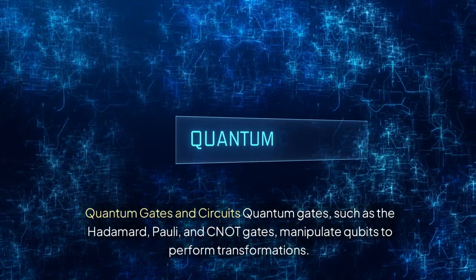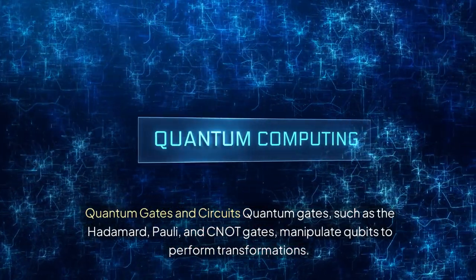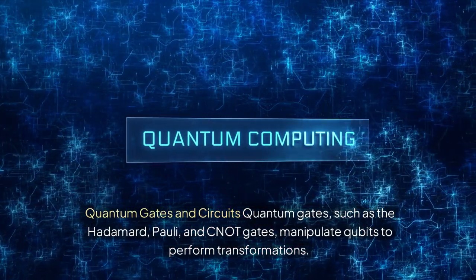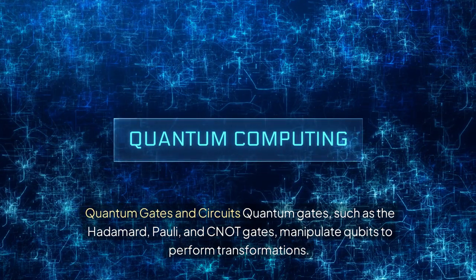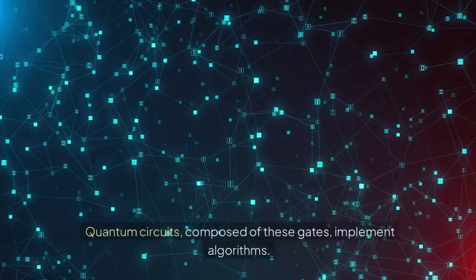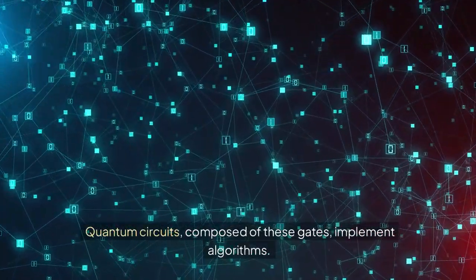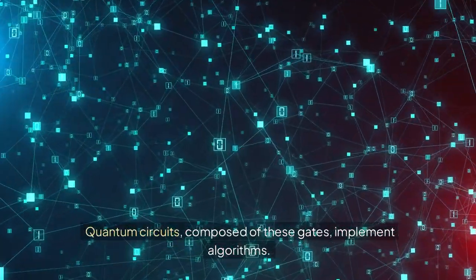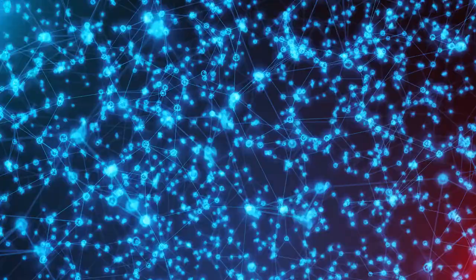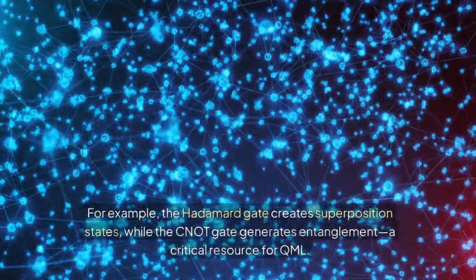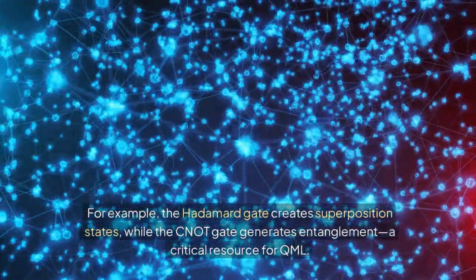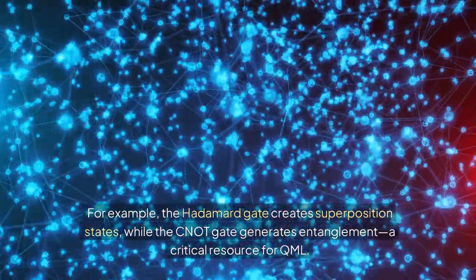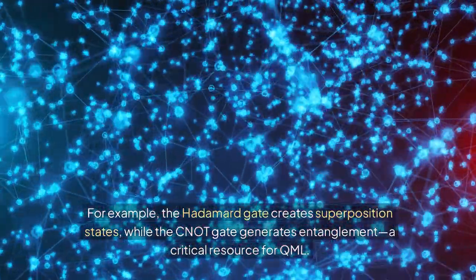Quantum gates and circuits: quantum gates such as the Hadamard, Pauli, and CNOT gates manipulate qubits to perform transformations, and quantum circuits composed of these gates implement algorithms. For example, the Hadamard gate creates superposition states while the CNOT gate generates entanglement, a critical resource for QML.